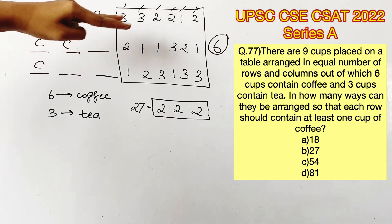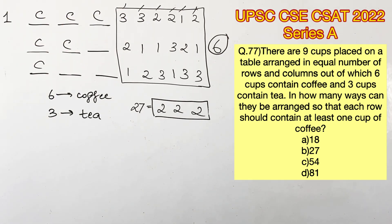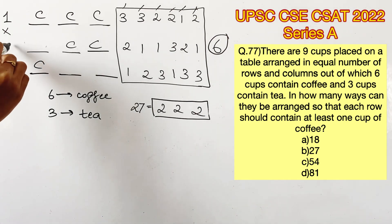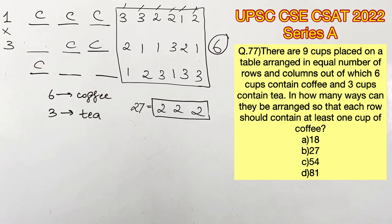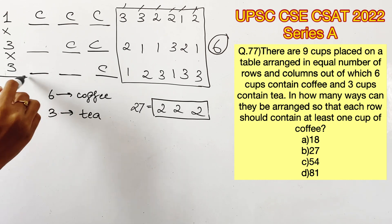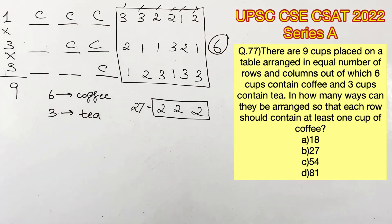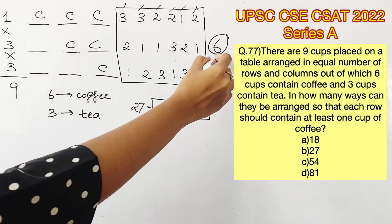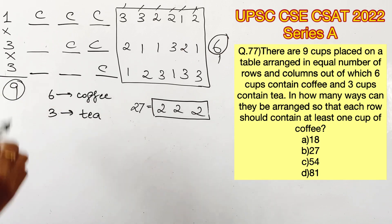Now let's find the arrangements possible with these numbers. If the first row contains three coffees, all three places are filled, so there is only one possible arrangement. Two coffees in a row can be arranged in three different ways. One coffee can also be placed in three different ways. Multiplying these gives nine arrangements for a single number configuration.